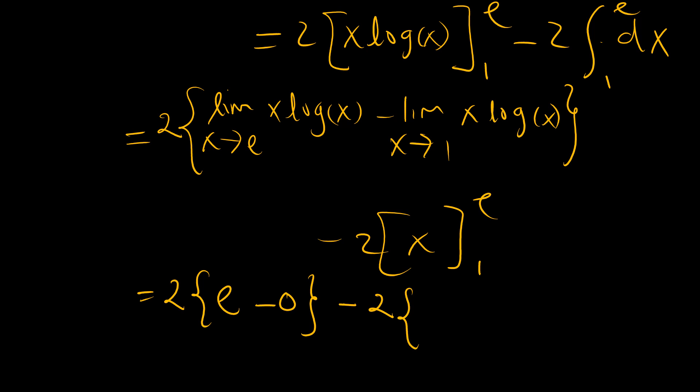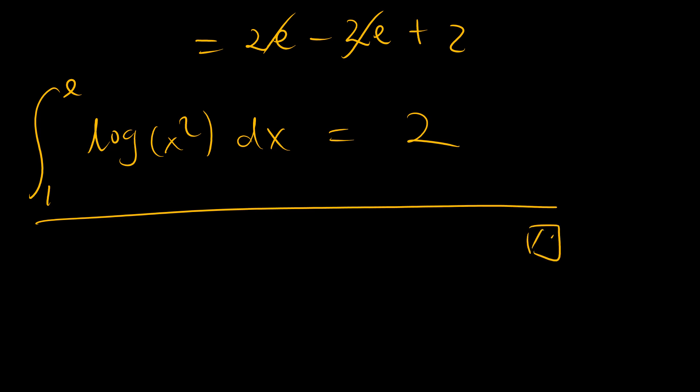So we can just do limit as x tends to e of x minus limit as x tends to 1 of x, right? So this is 2e minus 2, this is e, this is 1, so minus 1. Okay, so this becomes 2e minus 2e plus 2, so therefore the integral from x equals 1 to x equals e of the natural logarithm of x squared equals 2, and that, ladies and gentlemen, is our answer.